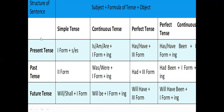Now, the structure of tenses. You can see simple present tense, present continuous tense, present perfect tense, and present perfect continuous tense. And similarly for past tense: simple past tense, past continuous tense, past perfect tense, and past perfect continuous tense. For future: simple future tense, future continuous tense, future perfect tense, and future perfect continuous tense. You can see those parallels.